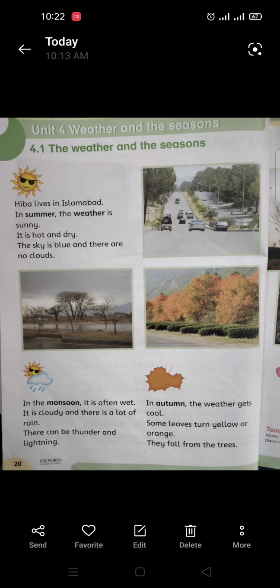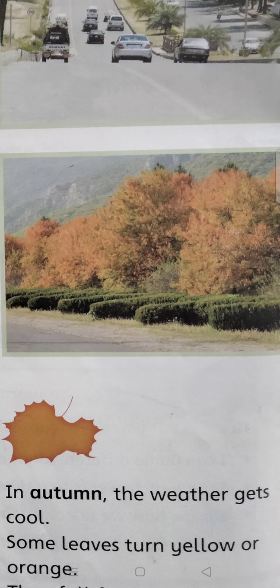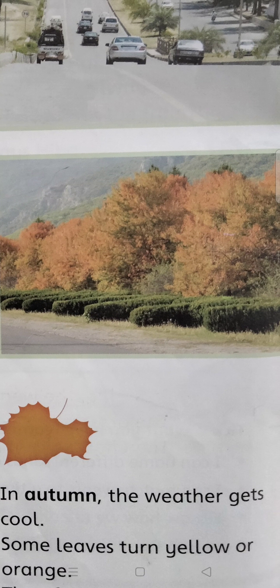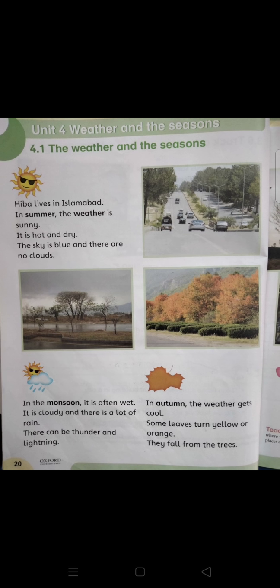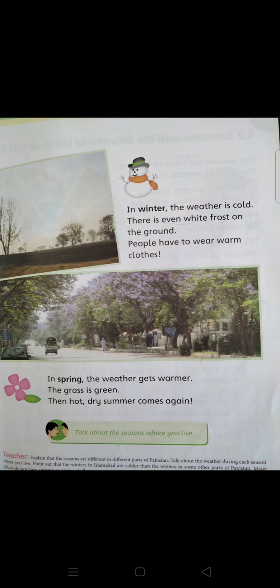In autumn, the weather gets cool. Some leaves turn yellow or orange and they fall from the trees, as you can see here.